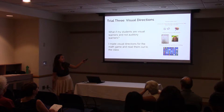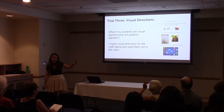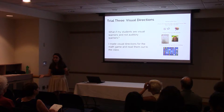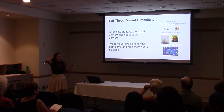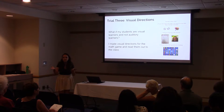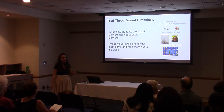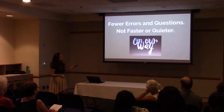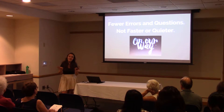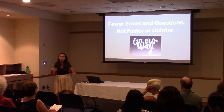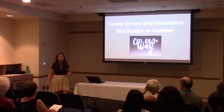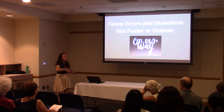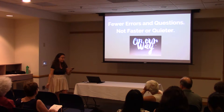So I made direction sheets that I would project on the board. I would point to the words while explaining each direction, and I included images so students could visually see exactly where I wanted them to put things. This helped — it made fewer errors, so students knew where to put materials and where to be. But they weren't any faster, quieter, or calmer. So I knew I had a good step but needed to do more.